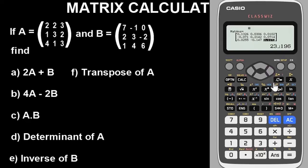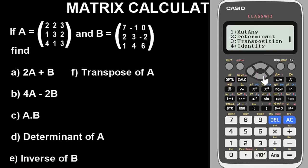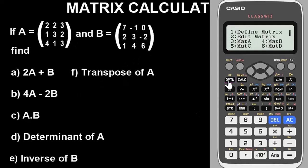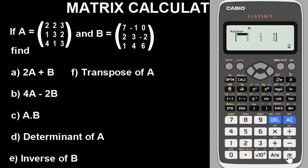To find the transpose of the matrix, go to option and navigate down to the transposition function. Select transpose of matrix A — go to option and input matrix A. Press equals to get the answer. This is the transpose of matrix A.